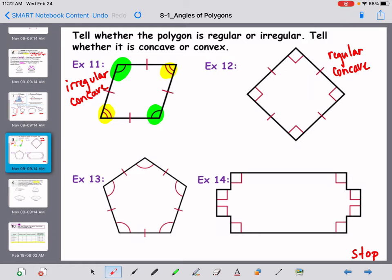Example thirteen: are all the sides and all the angles the same measure? Yes. So this is regular and it is convex.